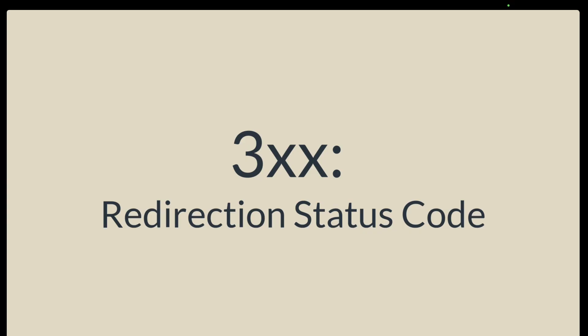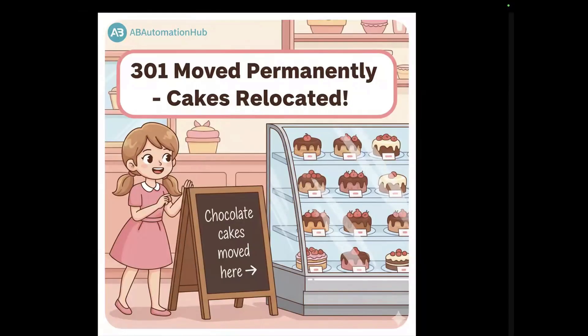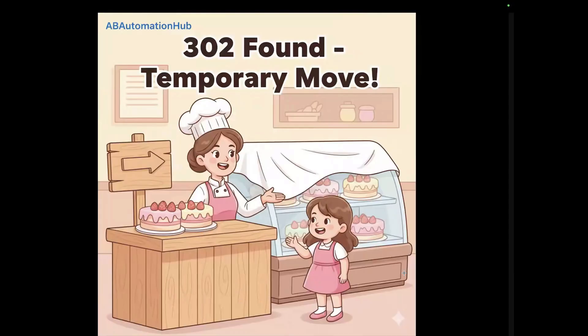Now let's move to the 3XX redirection status codes — the bakery points you somewhere else. Starting with 301 Moved Permanently: you go to the old chocolate counter and they say the chocolate cakes have moved permanently to a new shelf. That is 301 Moved Permanently. Next is 302 Found (temporarily). For today only, the cakes are at a different table, so go there for now. The cakes are temporarily moved to a new location — that's 302.